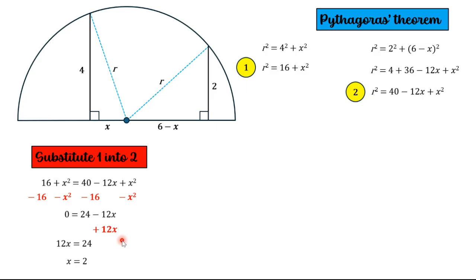Now that we know what the value of x is, we can substitute that into either of these two equations. It doesn't matter, but let's just substitute into equation 1. So instead of x, we now have a value of 2. We can simplify that to 4. So r squared equals 16 plus 4. 16 plus 4 is 20.